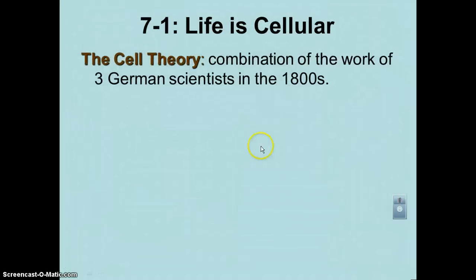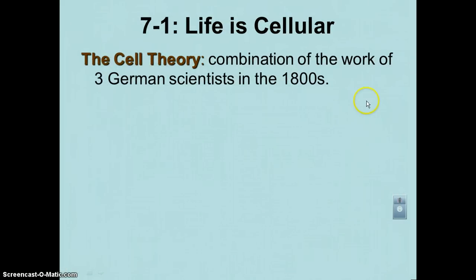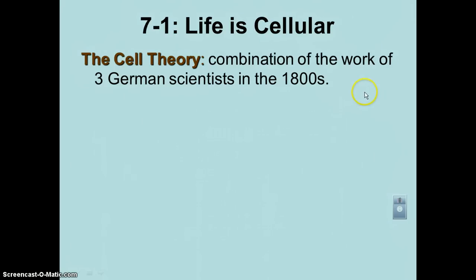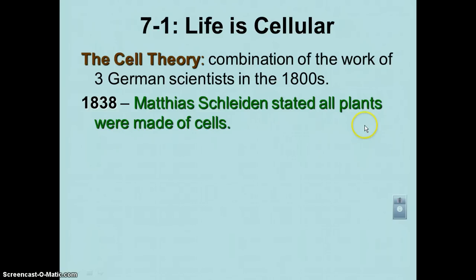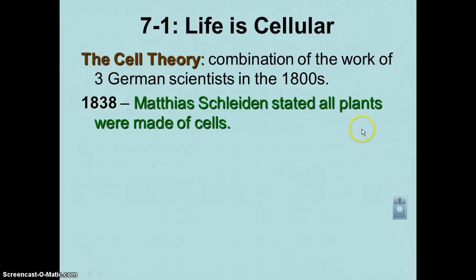Moving on to the cell theory. The cell theory was developed in the first half of the 1800s by a combination of three scientists. The first, in 1838, was Matthias Schleiden. He stated that all plants were made up of cells. He had looked at enough plant tissue and noticed that every single one was made out of cells, so he felt it was safe to assume that all plants were made out of cells.